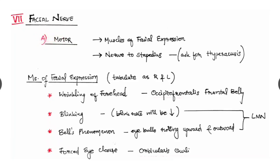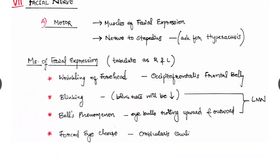Next is the facial nerve, the seventh nerve. Its motor part, secretomotor part and the sensory part we have to check. The motor part, the muscles of the facial expression and the nerve to stapedius are checked. The nerve to stapedius is checked by asking the patient for any hyperacusis. The muscles of the facial expression, we have tabulated it as right and left. And check for the wrinkling of the forehead by asking the patient to look upward. Here we are checking the frontal belly of the occipitofrontalis.